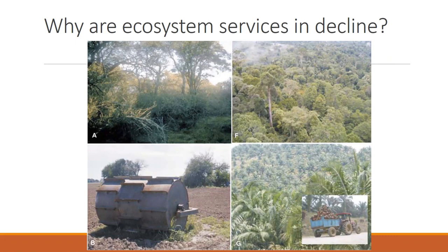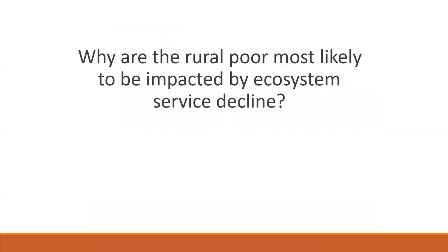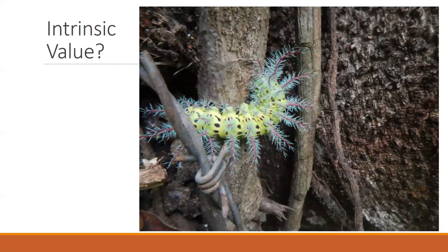Ecosystem services are in decline for several main reasons: deforestation, intensive agriculture, and shifting to monoculture. Palm oil is a key example — it's in so many processed foods we eat and is contributing to massive deforestation in the tropics, leading to a decline in ecosystem services across the globe.